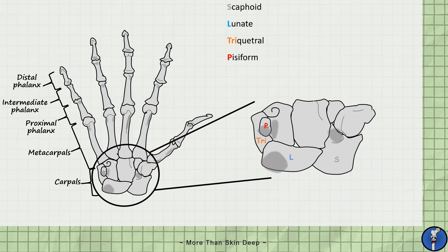In the second row we have the trapezium which articulates with the thumb. Then we have the trapezoid, the capitate and the hamate which has a prominent hook known as the hamulus. We also have a video showing how these bones work together to form the carpal tunnel so check that out if you're interested.